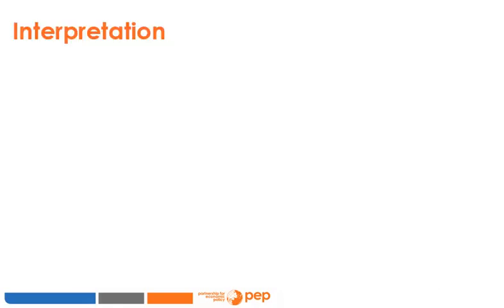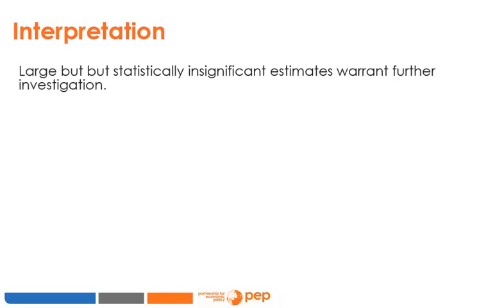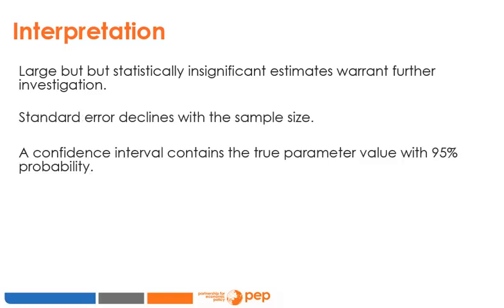The correct way to think about a result that is substantively significant — i.e., a large number — but statistically insignificant is that it warrants further investigation by conducting further experiments with larger sample sizes, which will diminish our uncertainty. Conversely, don't be overly impressed with statistically significant results without reflecting on their substantive significance: standard error declines with sample size, so anything can be significant with a large enough sample. The true question is how big the effect is.